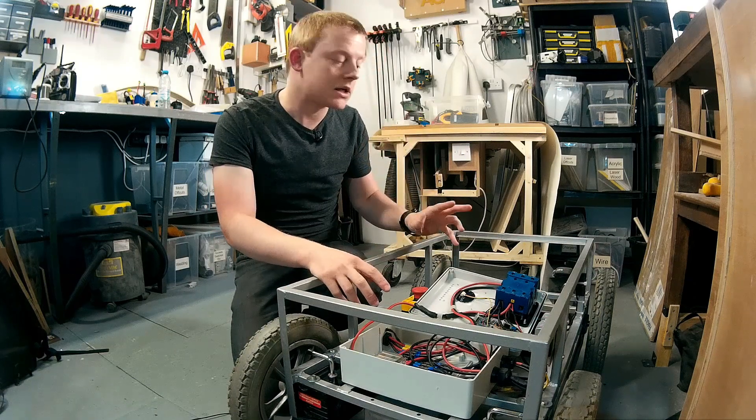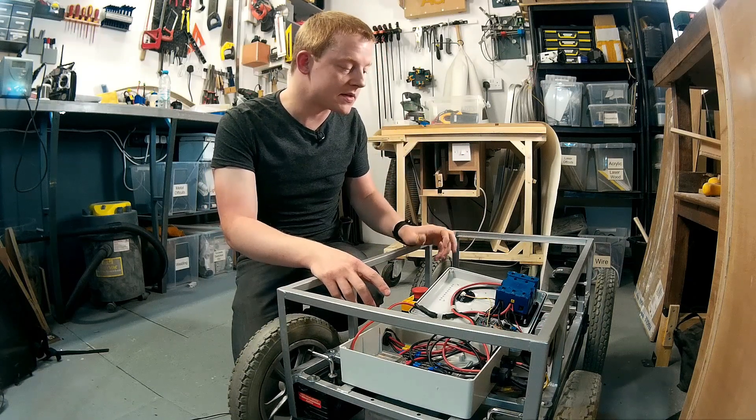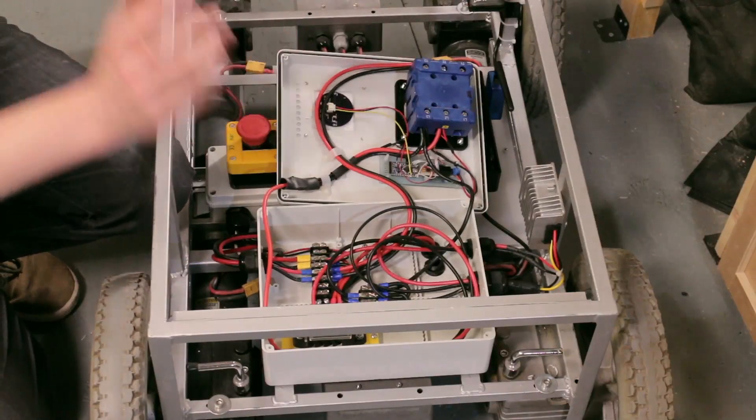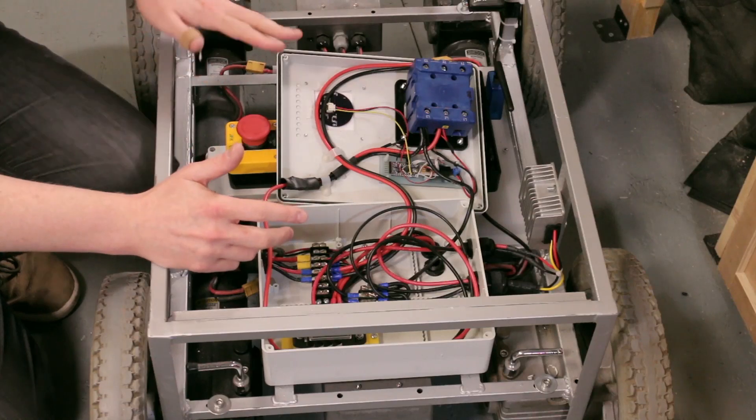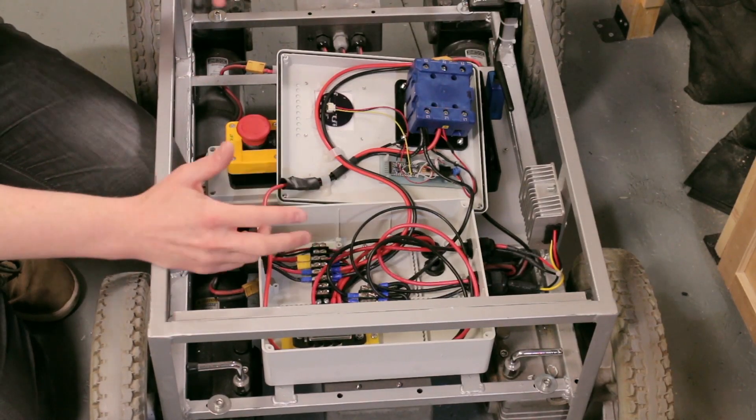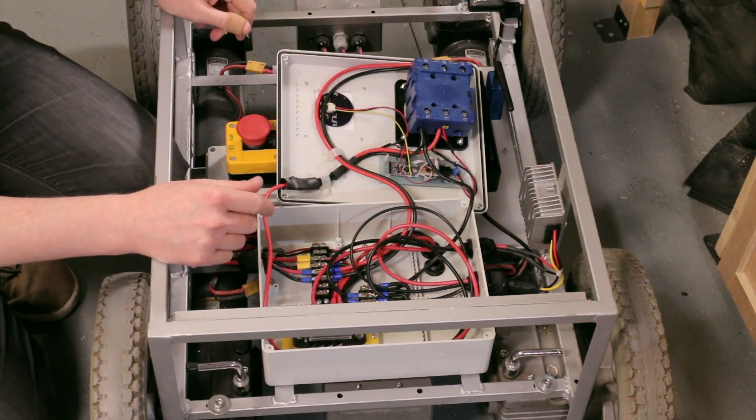5V is for the electronic control systems, the Arduino-based control system, the stop switch, etc. And 12V will be used for some of the sensor-based systems, new sensors I'm going to try and fit to this thing.